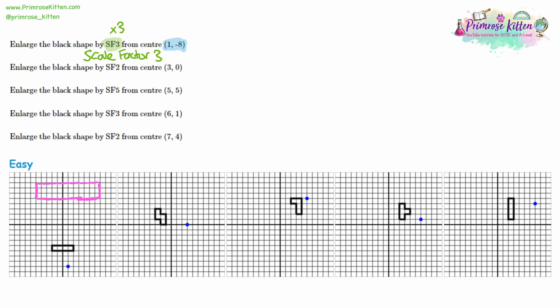So a one by four rectangle will become a three by twelve rectangle, and I've enlarged the rectangle by scale factor three. Now, what about the center? What did that have to do with it? And why did I draw the rectangle exactly where I drew it? Well, I've drawn the rectangle in a random place and I have ignored the center of enlargement. So if I did this in the exam, I'd probably get one mark and I'd lose a couple of marks because this is not in the correct place.